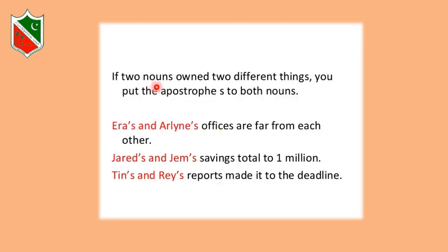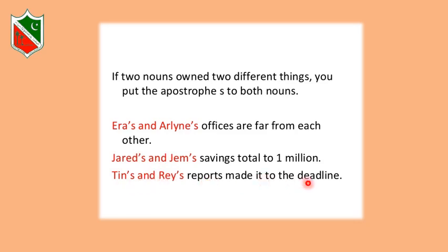If the two nouns own two different things, put apostrophe S after both nouns. For example, Era's and Erlin's offices are far from each other — their offices are different, so both get apostrophe S. Jared's and Jem's savings total one million — individually each has their own savings. Tin's and Ray's reports made it to the deadline — their reports are separate from each other.